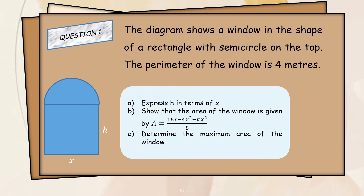Question one: the diagram shows a window in the shape of a rectangle with a semicircle on the top. The perimeter of the window is four meters. Answer the questions below: (a) express h in terms of x; (b) show that the area of the window is given by A = (16x minus 4x squared minus pi x squared) divided by 8; (c) determine the maximum area of the window.